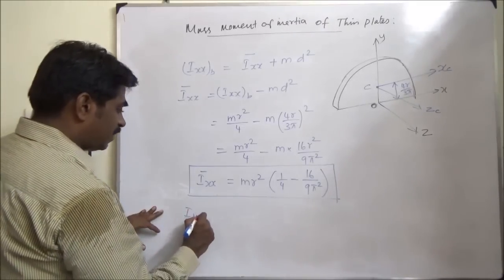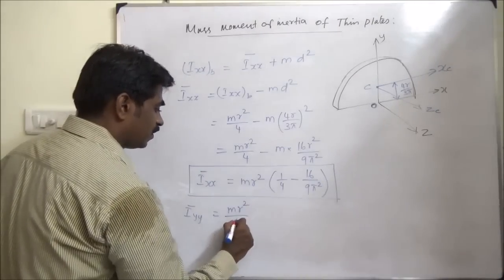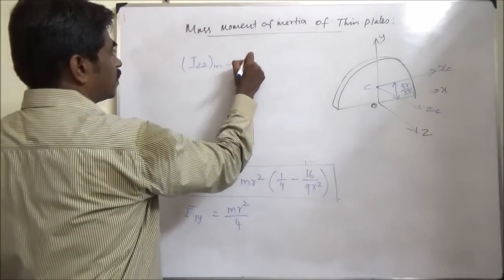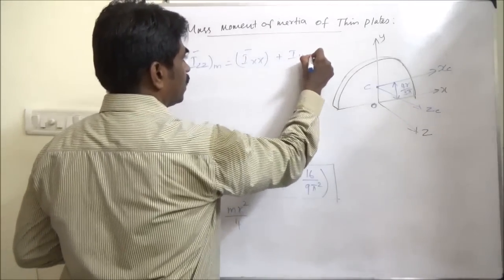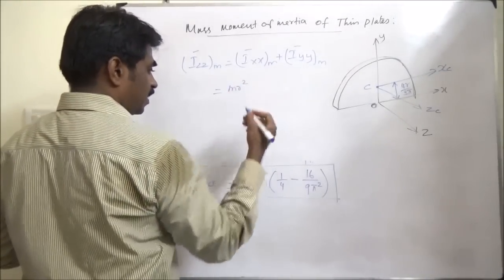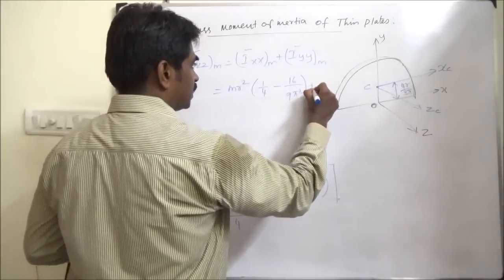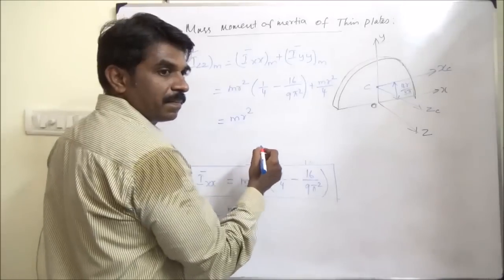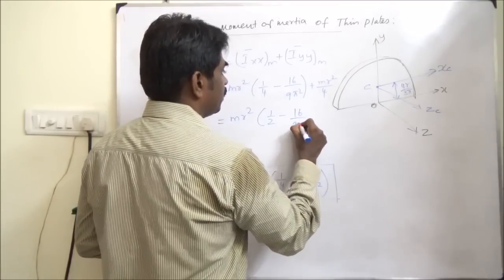Iyy_bar will be the same as before: m·r²/4, since there is no shift along the y-axis. Therefore, Izz_bar equals Ixx_bar plus Iyy_bar = m·r²(1/4 − 16/(9π²)) + m·r²/4, which gives m·r²(1/2 − 16/(9π²)).